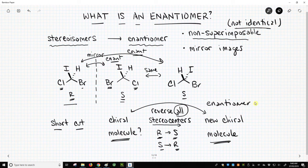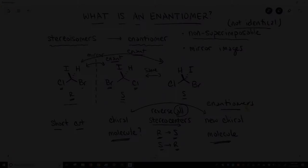So enantiomers are simply two stereoisomers that are non-superimposable mirror images, and they will have opposite configurations at all their stereocenters.